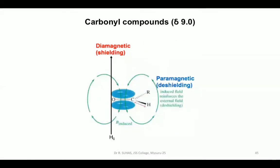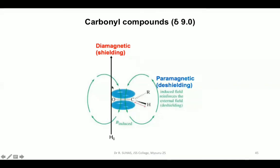For carbonyl compounds, the behavior is similar to alkenes. The magnetic field is applied along the axis of the C=O oxygen. The pi electrons circulate perpendicularly to the applied field, creating diamagnetic (shielding) and paramagnetic (deshielding) zones. The aldehydic proton falls within the paramagnetic (deshielding) zone due to reinforcement of the induced and tiny magnetic fields, giving high delta values around 9.